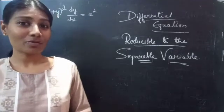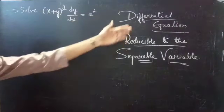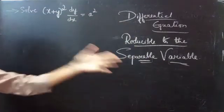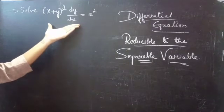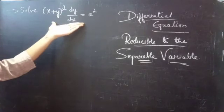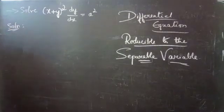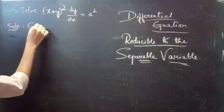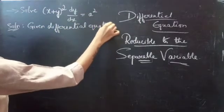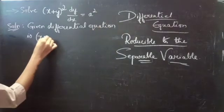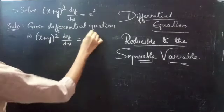Hello everyone, this is Vikalpana here. In this video we are going to see a problem: solve (x + y)² · dy/dx = a², from differential equations reducible to separable variable. The given differential equation is not in variable separable form, so we are going to reduce it to variable separable form.